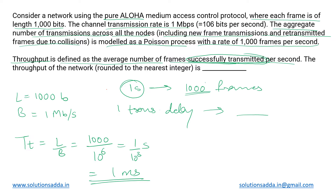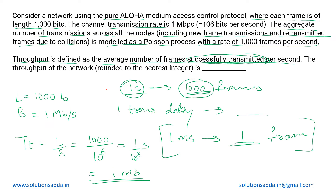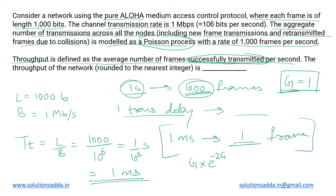So the transmission delay is 1 millisecond. If we generate 1000 frames in 1 second, then in 1 millisecond we generate exactly 1 frame. Dividing both sides by 1000, in one transmission delay we can transmit 1 frame. In pure ALOHA, we define G as the average number of frames attempted per frame transmission delay. Since the transmission time is 1 millisecond and 1 frame is generated per millisecond, the value of G equals 1.